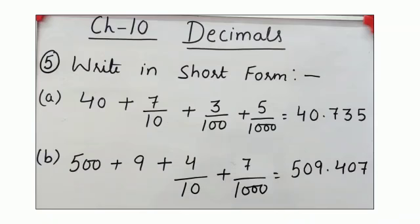Next question, question number 5. Write in short form. 40 plus 7 by 10 plus 3 by 100 plus 5 by 1000. 40 is a whole number, so we will write it before decimal. And 7 by 10, so we will write 0.7, 3 by 100, 73, and 5 by 1000, 5. So, the short form is 40.735.